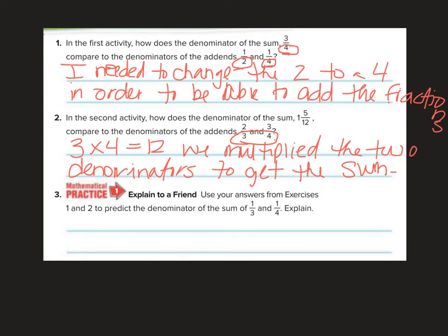Explain to a friend. Well, I guess you guys are going to have to be my friends. I'm going to explain it to you. Use your answers from exercises one and two to predict the denominator of the sum of one third and one fourth. Well I know that three and four, in order to add them, I'm going to have to multiply, so the denominator of the sum is going to be twelve.